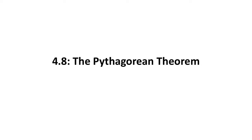Alright, so 4.8, the Pythagorean Theorem. Pythagoras was an ancient Greek guy, and maybe you've heard of him, maybe not. But one thing we need to remember is that, even though Pythagoras is considered a really smart dude, some people say he came up with the Pythagorean Theorem, but that's not true. The ancient Egyptians, which were way before the ancient Greeks, were using the Pythagorean Theorem — they just weren't calling it that. They were using it particularly in construction methods and applications.